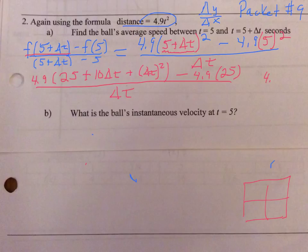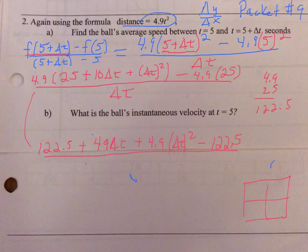4.9 times 25 is 122.5. So that value will come in twice. I'll have 122.5 plus 49 delta t, I'm distributing the 4.9, plus 4.9 delta t squared minus 122.5, still over delta t.